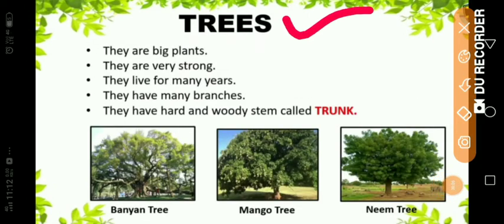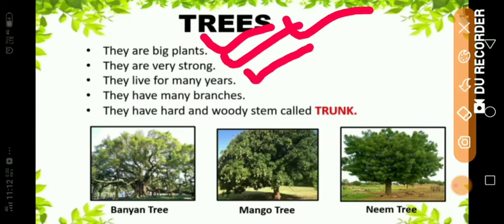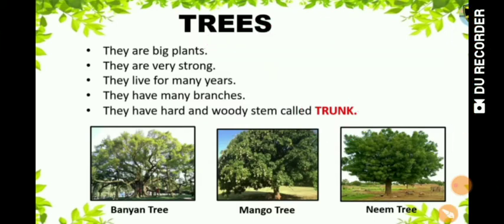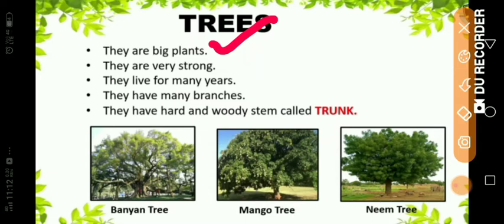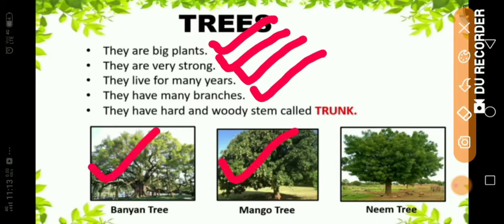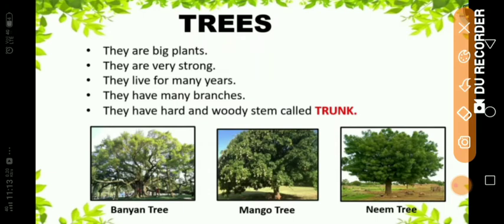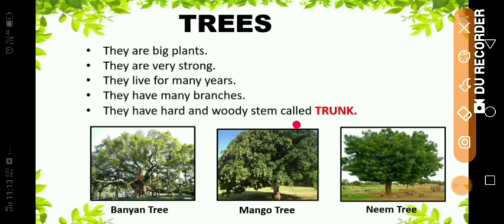The next type is trees. We already know a lot about trees. They are big plants, they are very strong, they live for many years, and they have many branches. They have a hard and woody stem called trunk. Trees are very big and very strong, and they can live for many years. They have many branches, and their stem is hard and woody, which is also called trunk. Examples of trees: banyan tree, mango tree and neem tree.